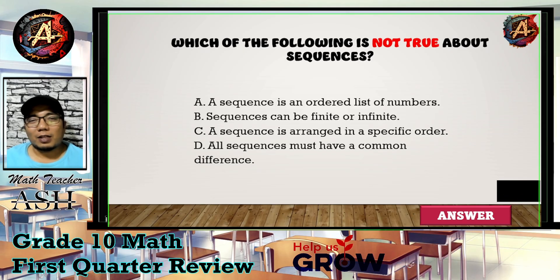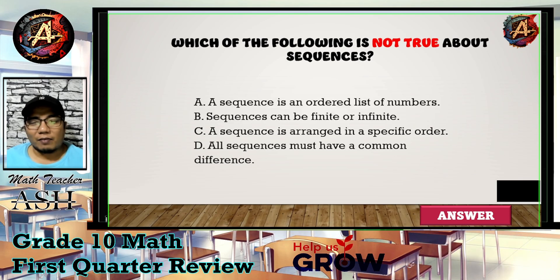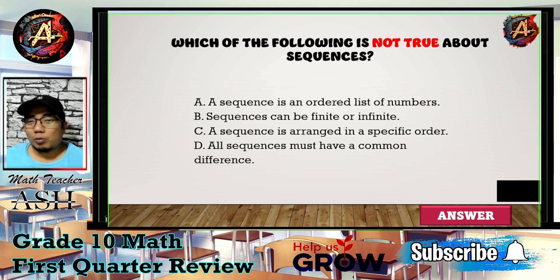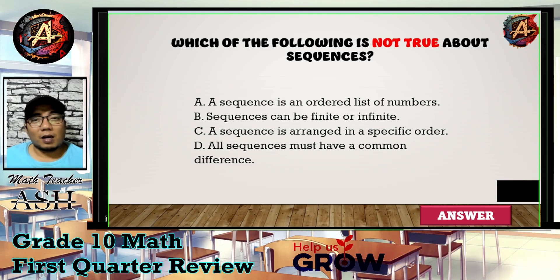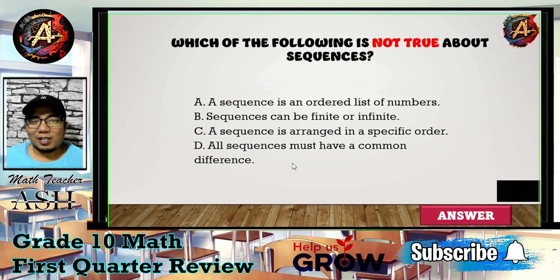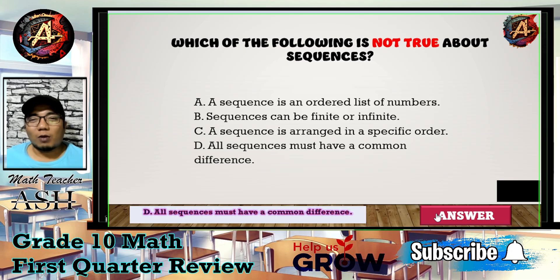We are finding the false statement. Among the four choices, only letter D is wrong. It says all sequences must have a common difference. Sequences have many types: arithmetic, harmonic, geometric, Fibonacci, and others. Common difference pertains only to arithmetic sequences, not all sequences. The correct answer is letter D.